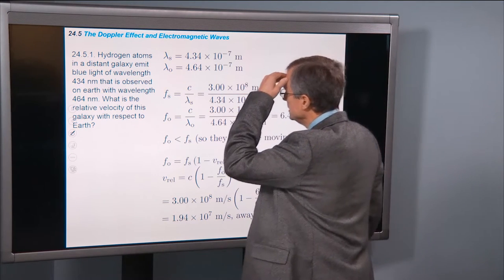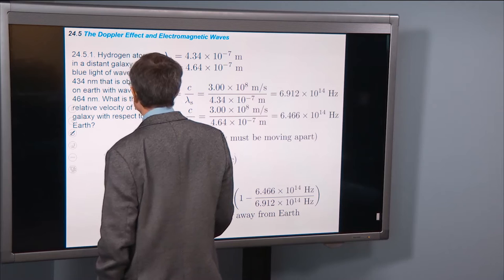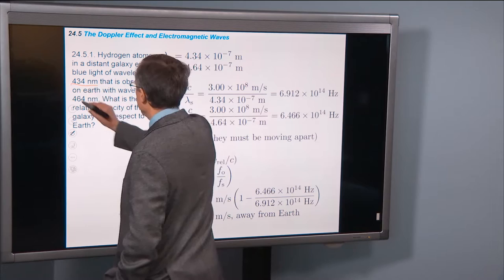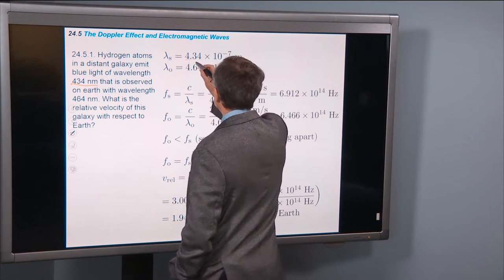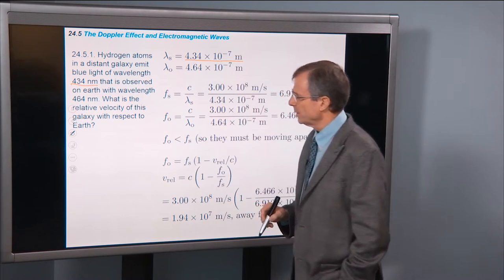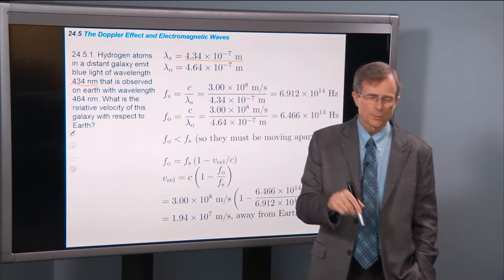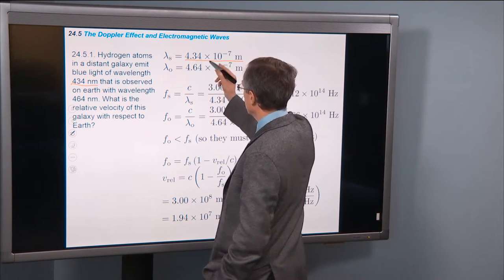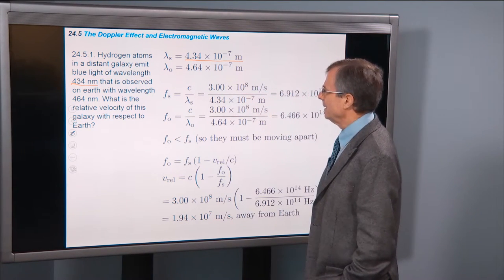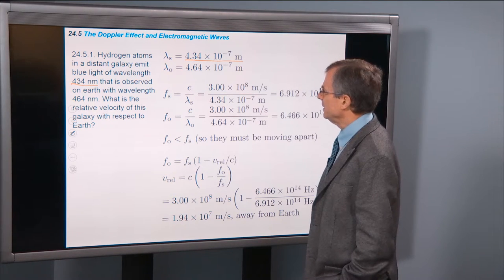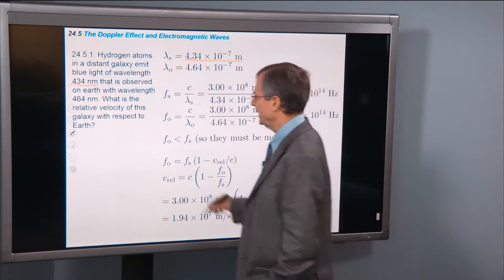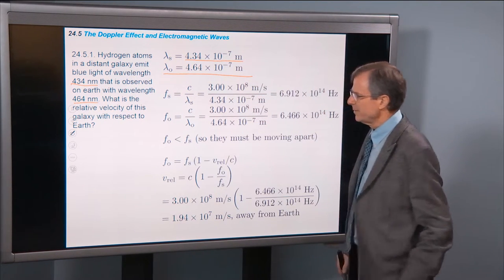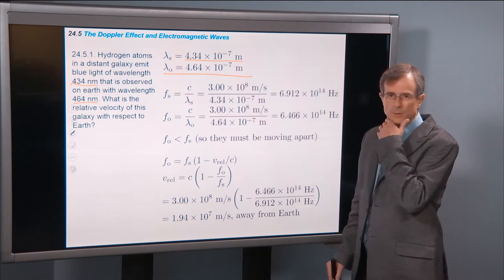An example: hydrogen atoms in a distant galaxy emit blue light. That's the wavelength emitted, 434 nanometers. That's the wavelength of the source. 434 nanometers is 434 times 10 to the minus 9 meters, which is the same as 4.34 times 10 to the minus 7 meters. And the observed wavelength is 464. We're trying to find the relative velocity of this galaxy with respect to the Earth.